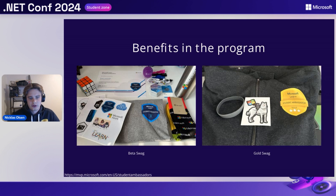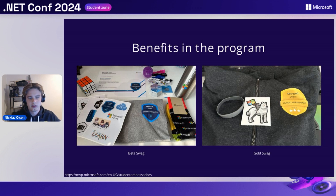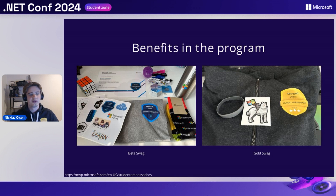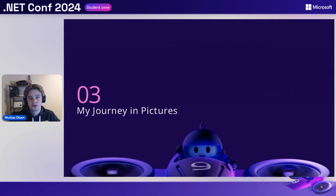Just to give you guys a quick overview of the benefits: we have the beta swag kit here in the left picture — you will get some stickers, a shirt, socks, and some other great things as well. The gold swag kit, on the other hand, is the sweatshirt that I'm wearing today, and also some stickers and a backpack as well.